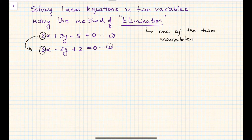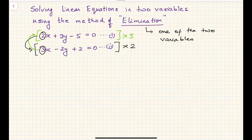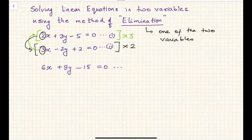What we do is take the coefficient of x from the first equation and multiply the second equation by it — in this case, 2. Then we multiply the first equation by the coefficient from the second equation, which is 3. So rewriting after multiplication: the first equation becomes 6x + 9y − 15 = 0. Let this be equation number three.